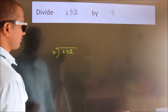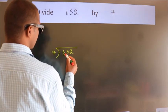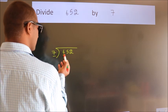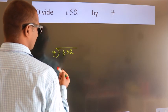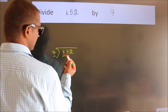Next. Here we have 6. Here 7. 6 is smaller than 7, so we should take 2 numbers: 65.